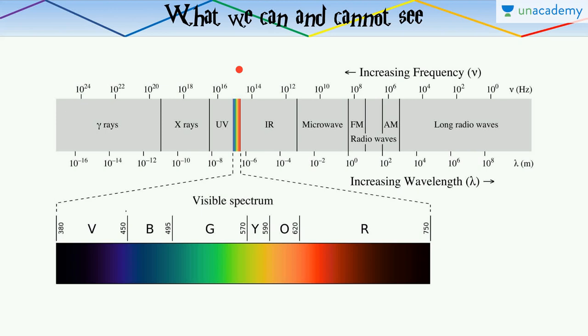Now the visible light ranges from violet to red ranging from around 350 or 400 nanometers till around 750 nanometers which is a very short range in the entire electromagnetic spectrum that there is. Our eyes are just sensitive to a very small part of it.